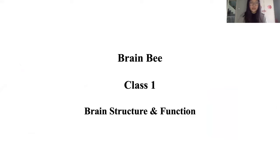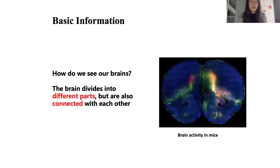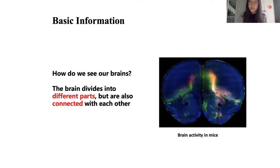In this lesson we're going to learn about basic brain structure and functions. There are two main parts: the first part is basic information, and the second part is brain structure. Our brain is quite mysterious and we haven't discovered all of its functions, but we know that the brain divides into different parts that are also connected with each other. There are approximately 17 different parts, and after this lesson you'll learn about their functions and locations.